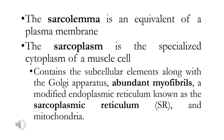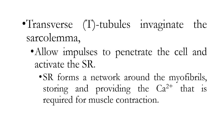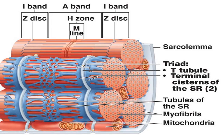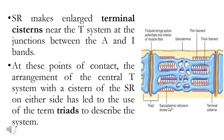As a review: the sarcolemma is the equivalent of a plasma membrane, and the sarcoplasm is a specialized cytoplasm of the muscle cell. It contains organelles including the Golgi apparatus, myofibrils, and a modified endoplasmic reticulum known as the sarcoplasmic reticulum, which contains high levels of calcium, as well as mitochondria. The sarcoplasmic reticulum covers the myofibrils with terminal cisternae surrounding the T-tubules, which are invaginations of the sarcolemma.